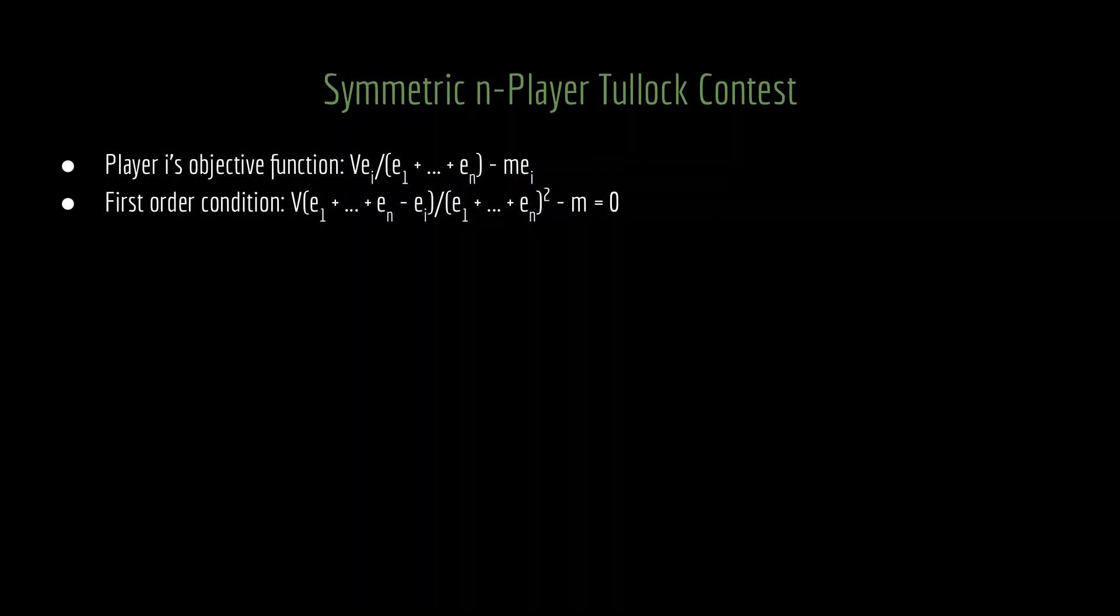To calculate i's optimal effort level, we take the first order condition. That is, we take the derivative of the first line with respect to e_i, because that is the thing that player i controls, and set it equal to 0. And if you do that, we get that expression on the second line.